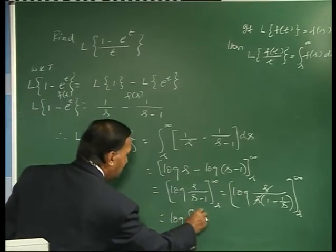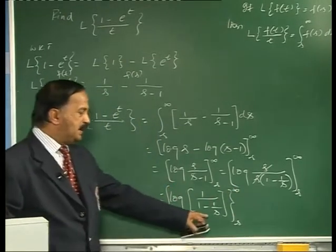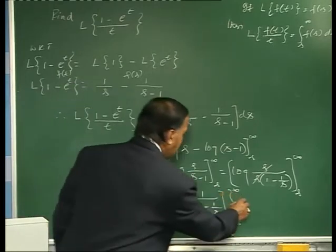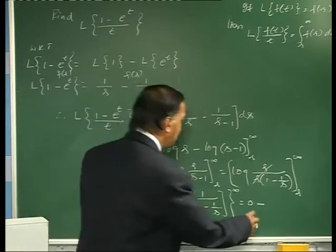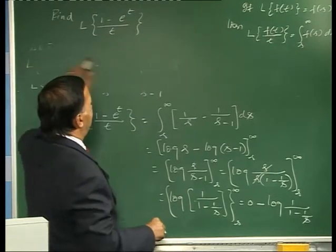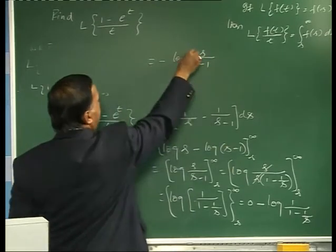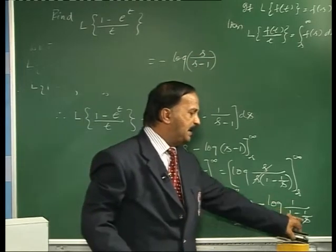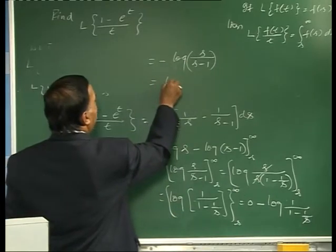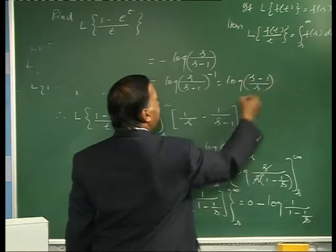Putting s equal to infinity: 1/infinity is 0, so log 1 equals 0. So the result is 0 minus log[1/(1-1/s)]. After simplifying, this equals minus log(s/(s-1)), which equals log(s/(s-1))^{-1}, or log((s-1)/s). This is the answer.